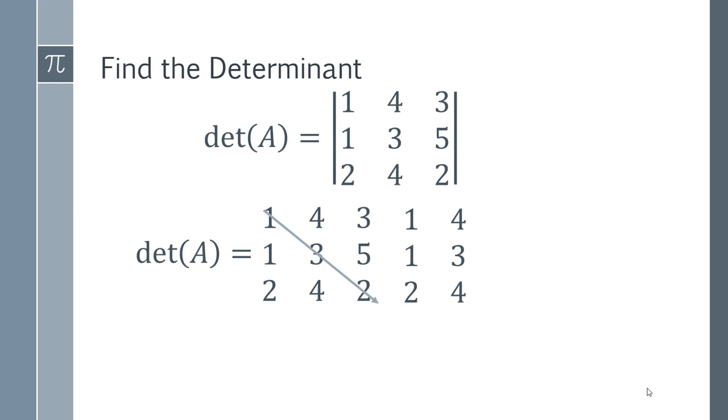So we get 1x3x2, and then we do 4x5x2, and then we add on to that again, 3x1x4. So we're just multiplying across the diagonals and adding each of those diagonal lines together.